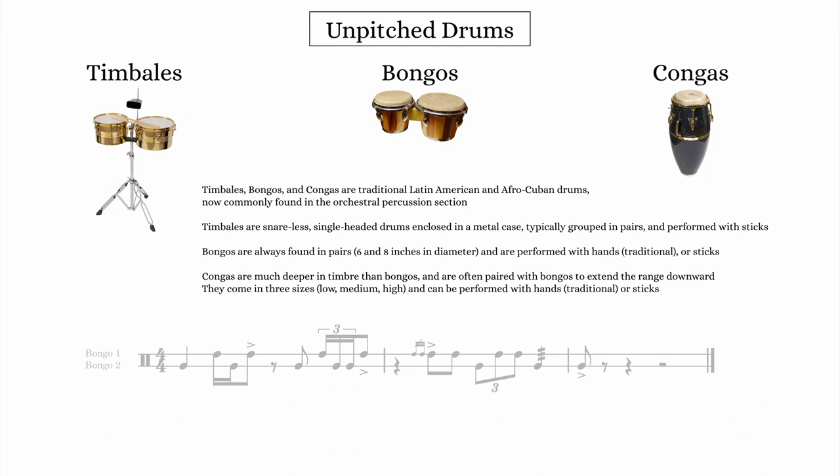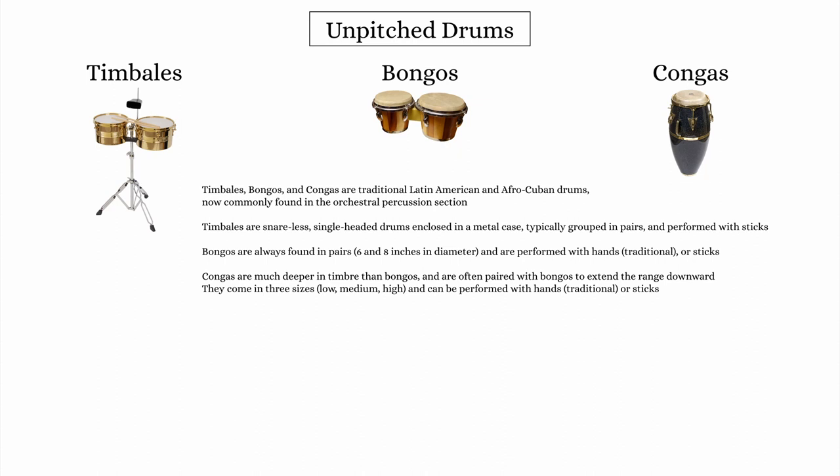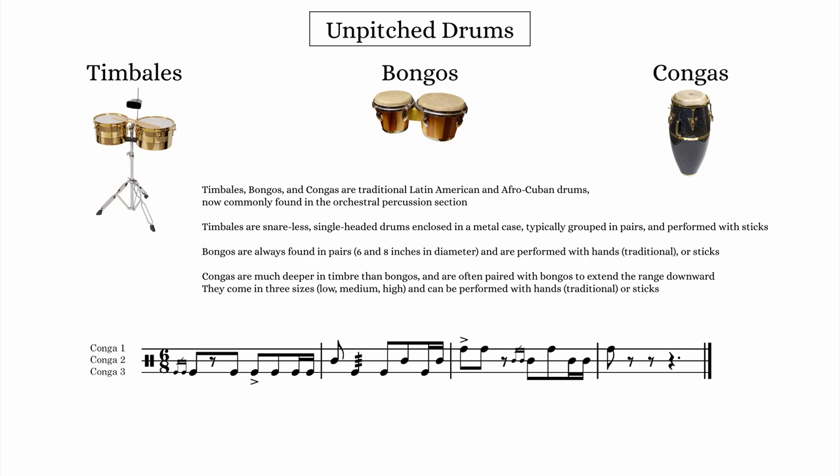Lastly, the congas are an extension of the bongo drums downward in register. They are played similarly to bongos and can be found in groups of two or three, or simply just one conga drum. They have a much deeper sound than bongos, but not necessarily low in pitch, although different hand techniques allow for lower sounds. There are many other unpitched drums including the frame drum, the djembe, and the tambourine, and while most are not standard orchestral percussion instruments, they can be used in the orchestra for contrasting colors, timbres, and textures.